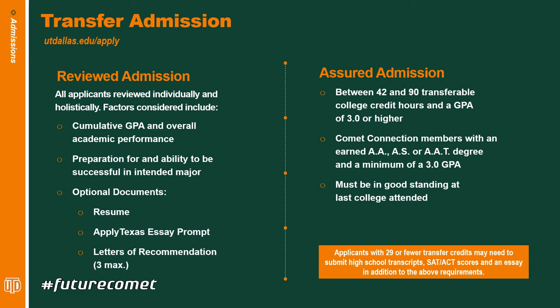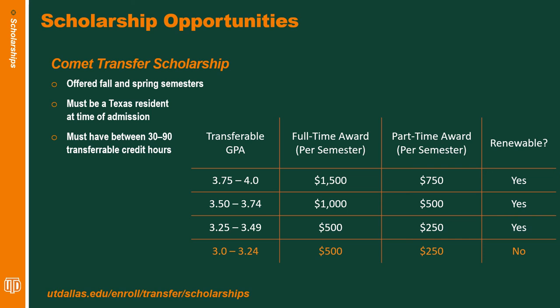You can qualify for assured admission if you have between 42 and 90 transferable hours with a 3.0 GPA, or if you are a Common Connection member with an associate's degree — AA, AS, or AAT — with a 3.0 GPA and you're in good standing at the last college attended. Please note that anyone with fewer than 30 credit hours is recommended to go ahead and submit their high school transcript, SAT or ACT scores, and also the essay so that the committee has more information to review.